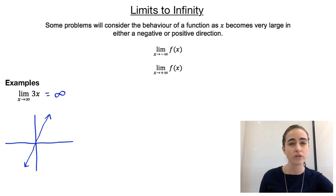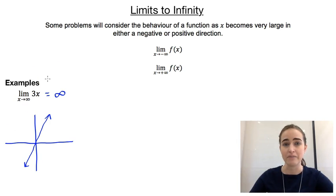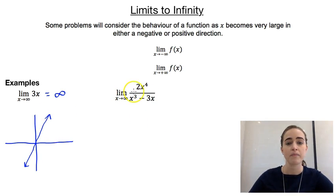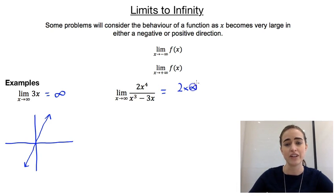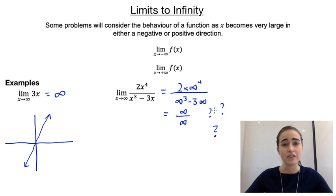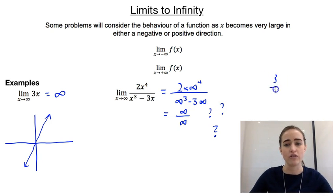Another way to think about that is substituting in — so we could look at it as 3 times infinity, which would just give us infinity. But we have to be really careful, because infinity isn't a number, so we can't treat it like one. So there are a few things we have to watch out for. Our next example has the limit as x approaches infinity of 2x to the power of 4, all over x cubed minus 3x. If we think about substituting in infinity here, we'd end up with infinity over infinity, which doesn't make any sense at all. It's not like a number — if you had 3 over 3 that would simplify to 1, but because infinity is not a number, we can't do that.